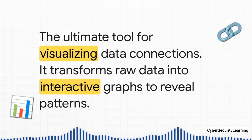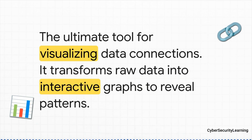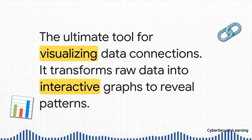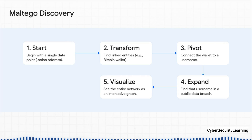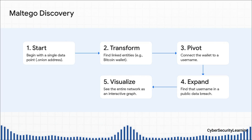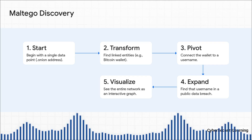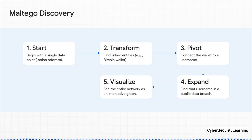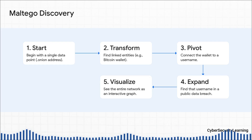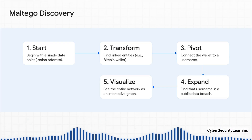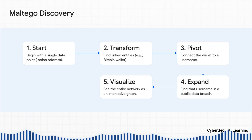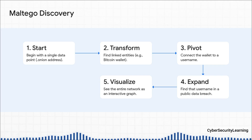By now you have a mountain of data: usernames, sites, wallets, emails — it's overwhelming. How do you see the forest for the trees and find the really meaningful connections? The answer is visualization, and the undisputed king of OSINT visualization is Maltego. It turns a boring spreadsheet of data into an interactive map of your investigation. Start with just a .onion address, run a transform, and it finds a Bitcoin wallet mentioned on the site. Pivot off the wallet, find a username on a forum, run another transform and discover it was part of a data breach linking to an email address. All of a sudden you have a visual chain connecting a hidden service all the way to a real-world identifier.